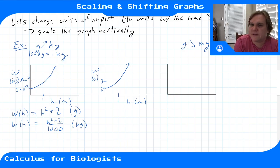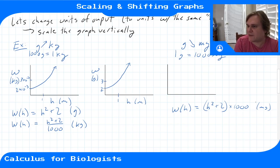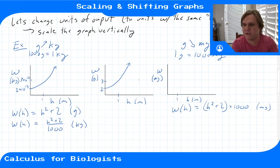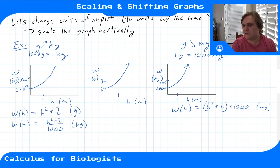If we make the output units smaller — changing from grams to milligrams — then 1 gram equals 1000 milligrams, so our function becomes (h² + 2) × 1000, in milligrams. For every gram we had originally, we now have 1000 milligrams, so we multiply the output by 1000. The graph looks similar but the vertical axis is now much larger — 2000 when h = 0 and 3000 when h = 1.